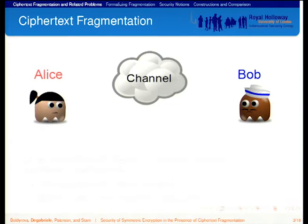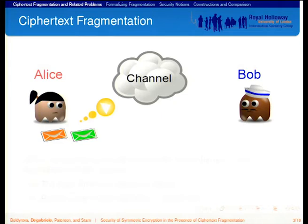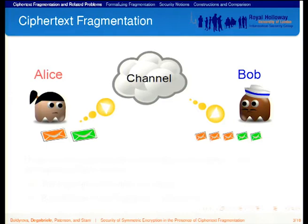So what is ciphertext fragmentation about? We have the usual setting where Alice and Bob want to communicate securely over a secure channel. Alice will use an encryption scheme, take some messages and encrypt them, then send these ciphertexts over the channel. The channel will now behave differently than we normally assume — it will deliver the ciphertext in a sequence of chunks, which we call ciphertext fragments. This imposes some further requirements on Bob: it requires extra functionality in order to parse the ciphertext fragments correctly and have correct decryption.